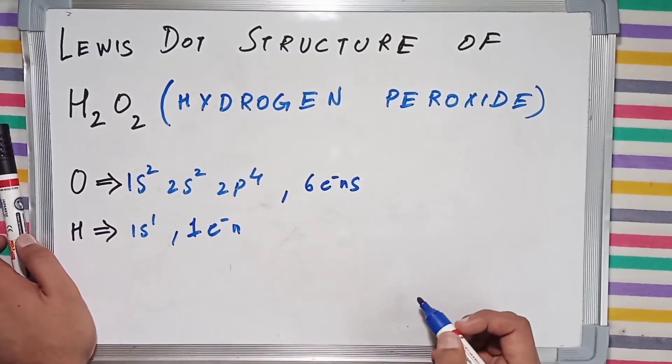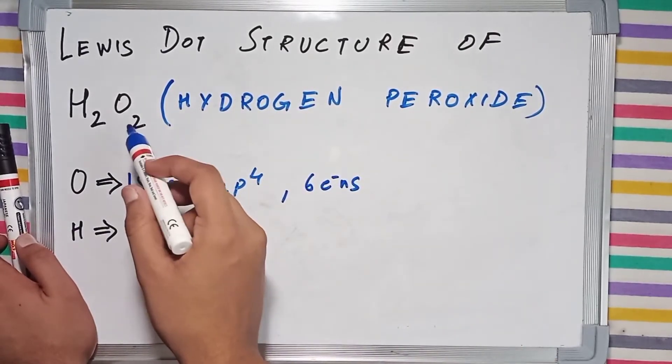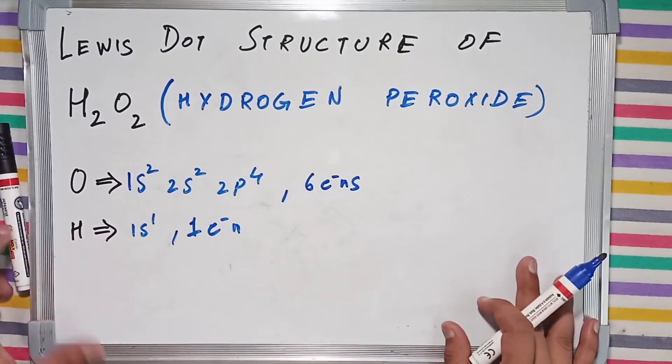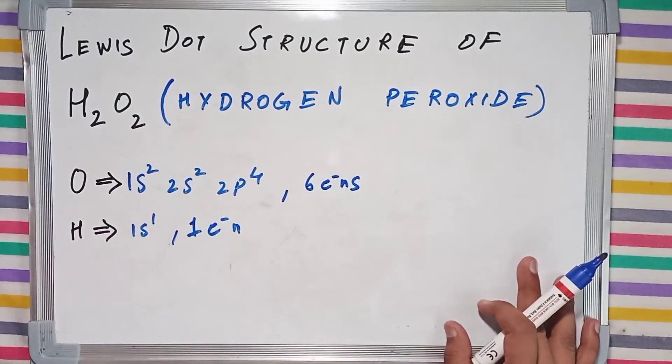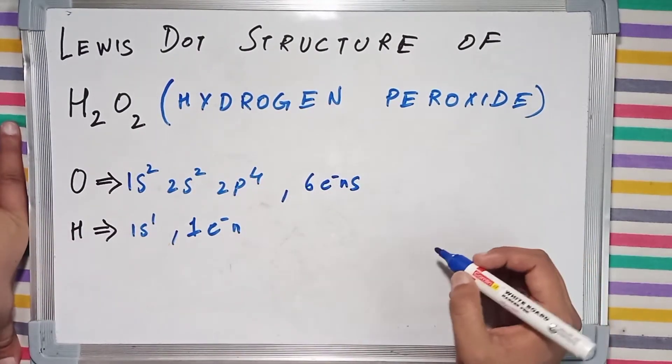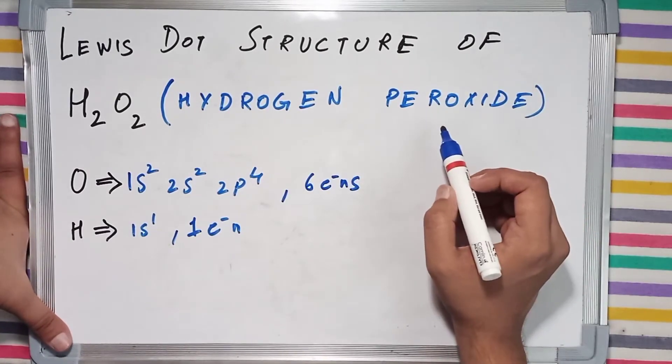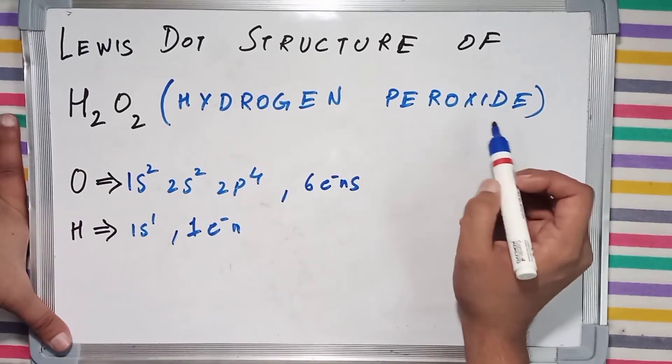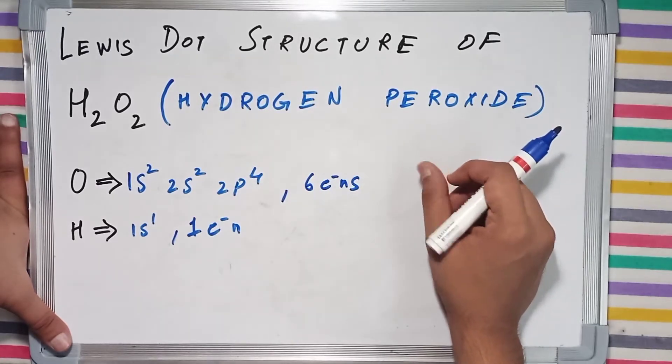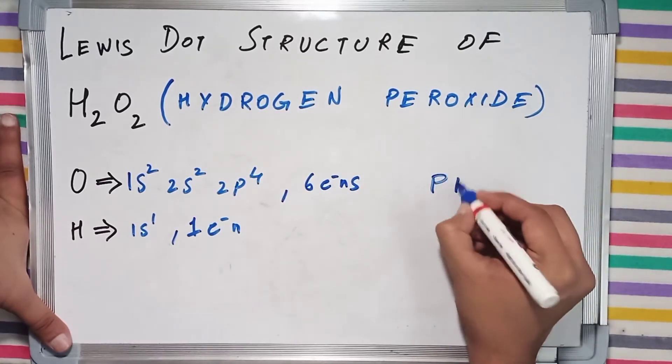Now hydrogen peroxide has 2 atoms of oxygen and 2 atoms of hydrogen. Its name carries the word peroxide, which means it will have a peroxy linkage. What is peroxy linkage?